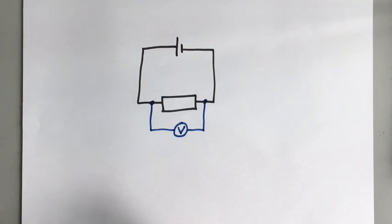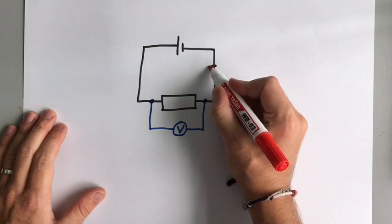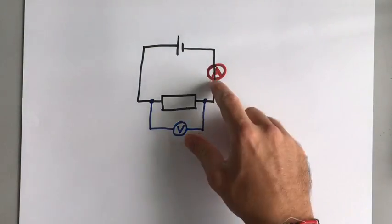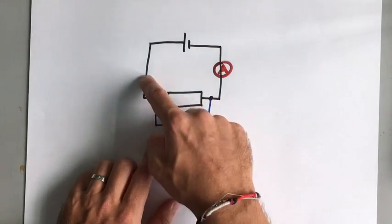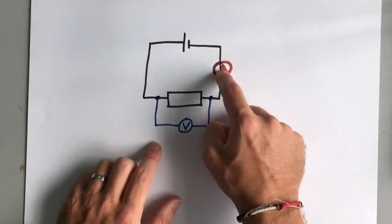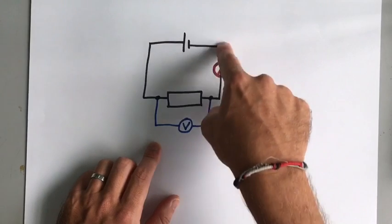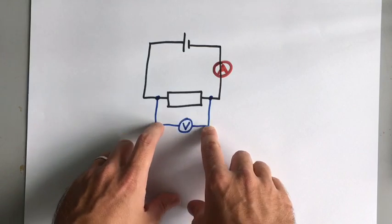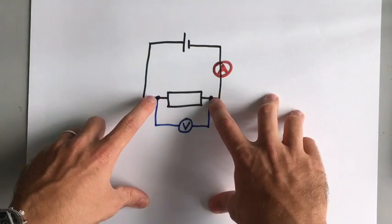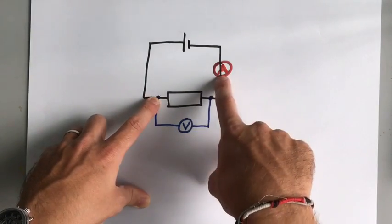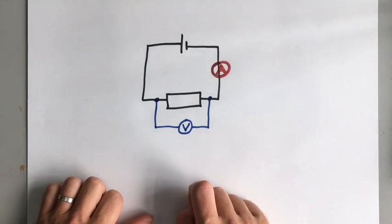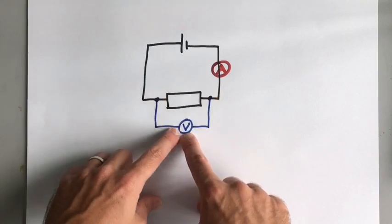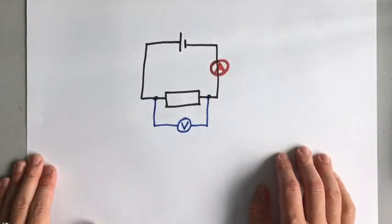We also need to find out the current — the amount of charge flowing in a certain amount of time. We use an ammeter for that, which is a circle with the letter A in it. The ammeter has to go in the actual circuit. If we put the ammeter outside the circuit then no electrons would flow through it and it would just read zero. The voltmeter has to be connected outside the circuit, because it's measuring the potential difference between two different points. If we put the voltmeter in series, it will always read zero because it's measuring the potential difference at the exact same place. So the voltmeter goes around the component and the ammeter goes within the circuit.